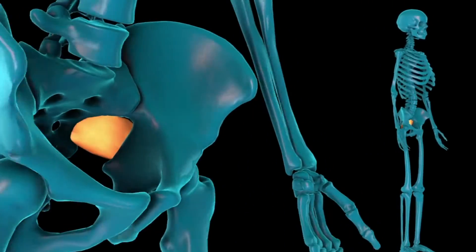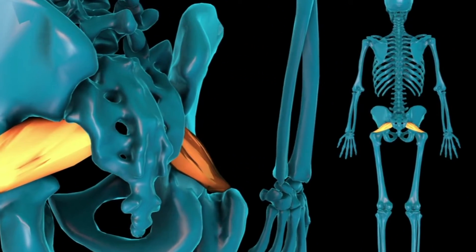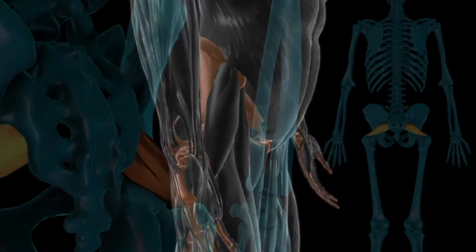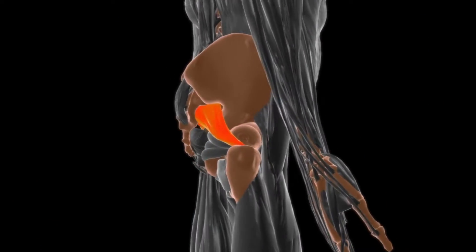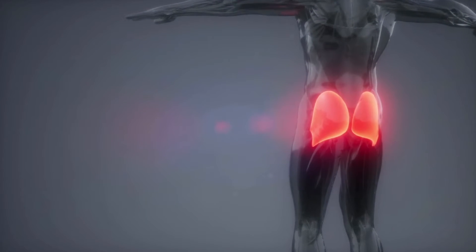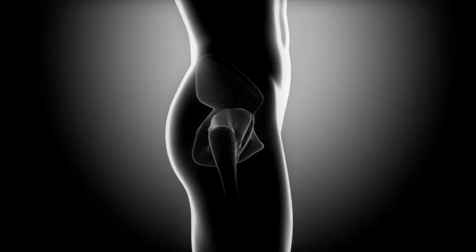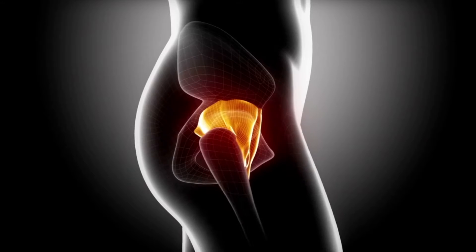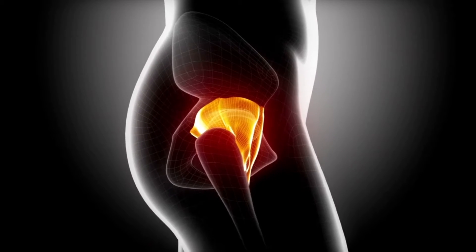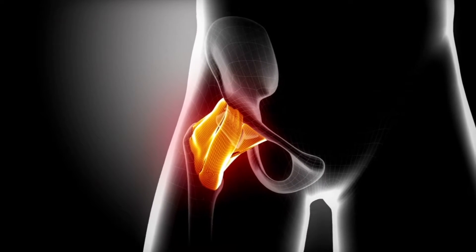The sciatic nerve is also in close proximity to the piriformis muscle. The piriformis is a muscle found at the back of the hip in the gluteal region, embedded deep in the gluteus maximus. This muscle is very important for the rotation of the hip and leg. In some people the sciatic nerve even runs through this muscle.